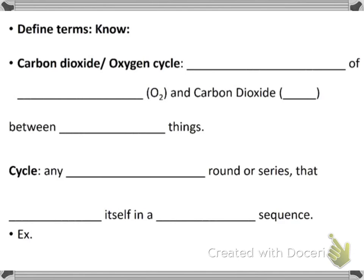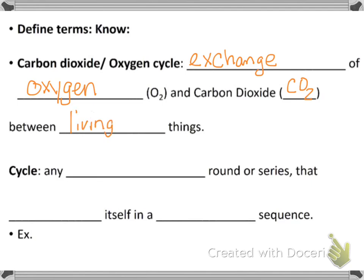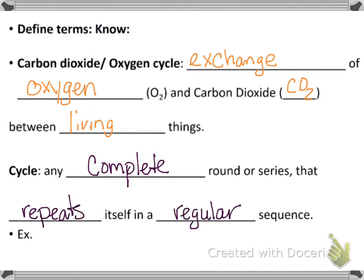So like always, we're going to start off with our terms to know. We have the carbon dioxide-oxygen cycle. It's an exchange of oxygen, or O2, and carbon dioxide, which is CO2, between living things. Basically, you could use us as an example — we inhale oxygen, we exhale carbon dioxide. That's the cycle.